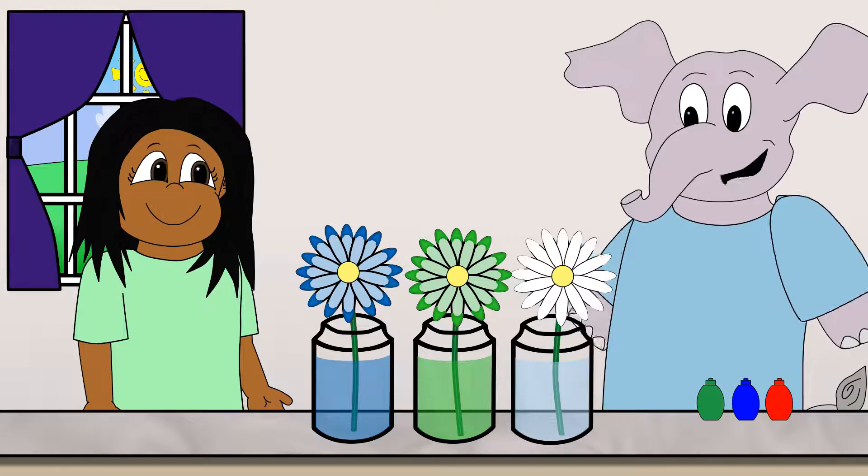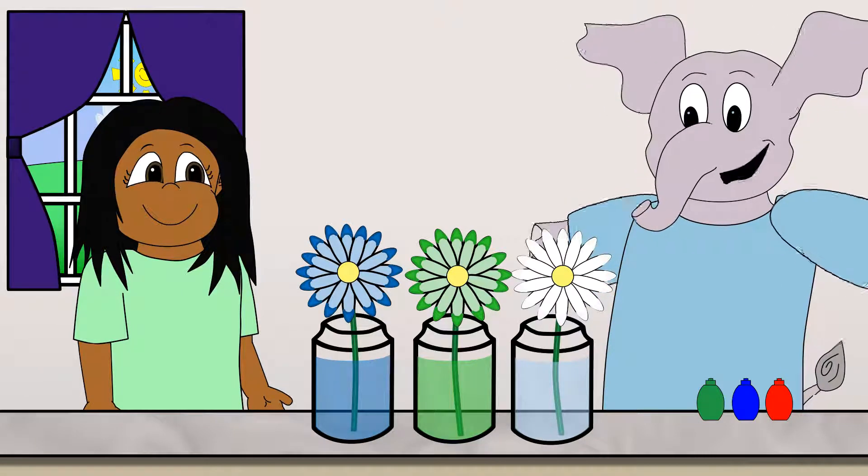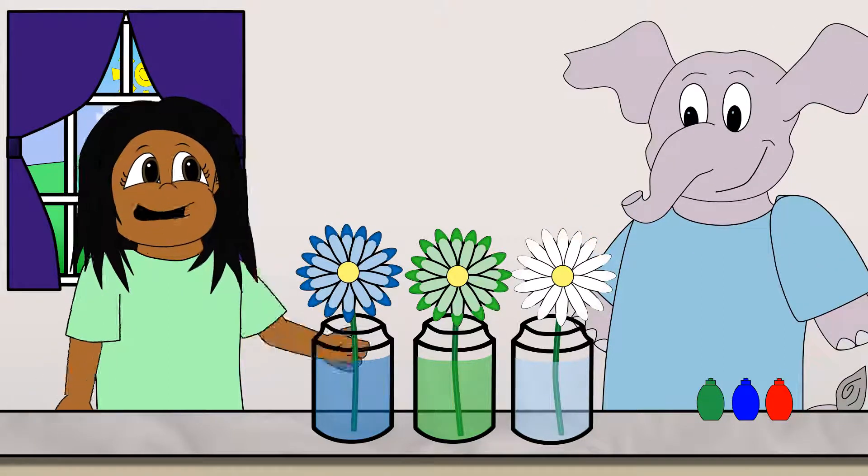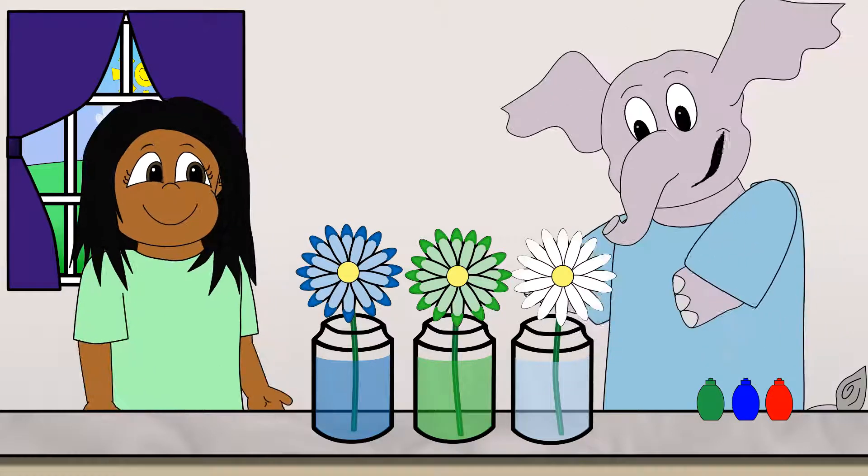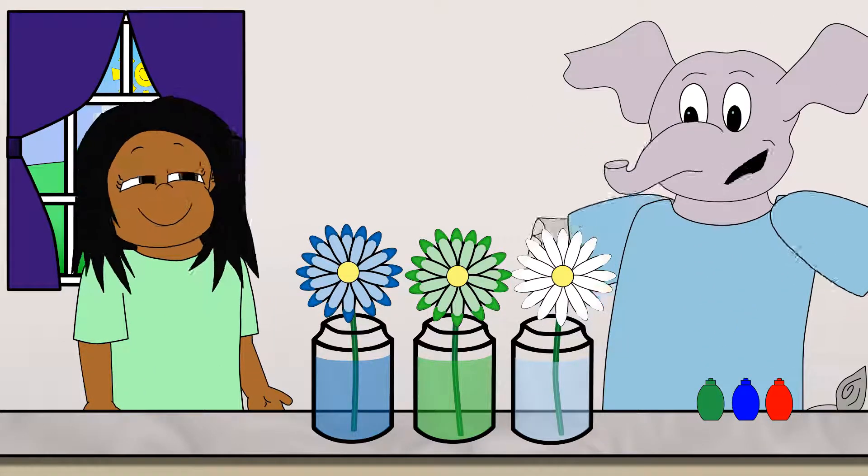Asha! Look! Our flowers look different. They have changed. You're right, Sun. It looks like the flowers absorbed the colored water through their stem. And our control flower didn't change color at all.